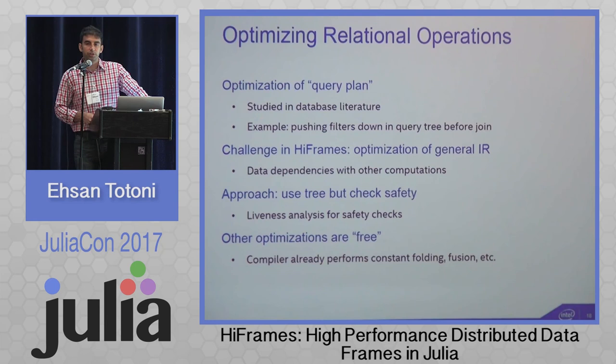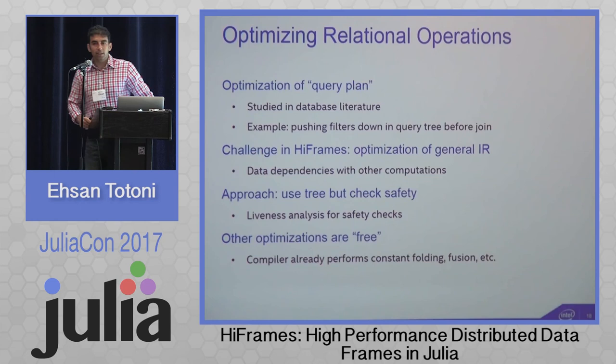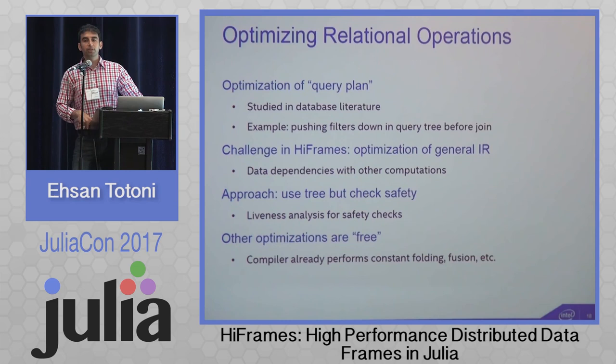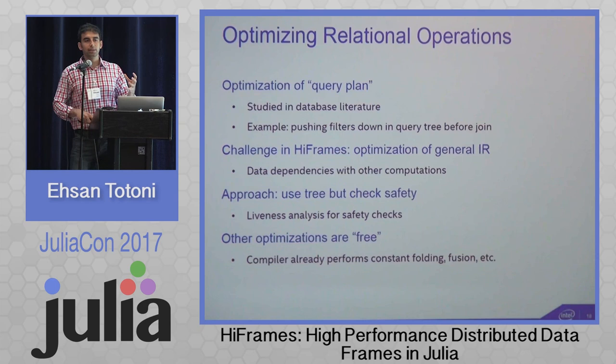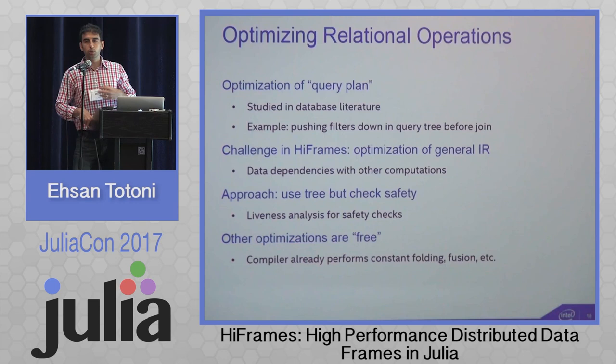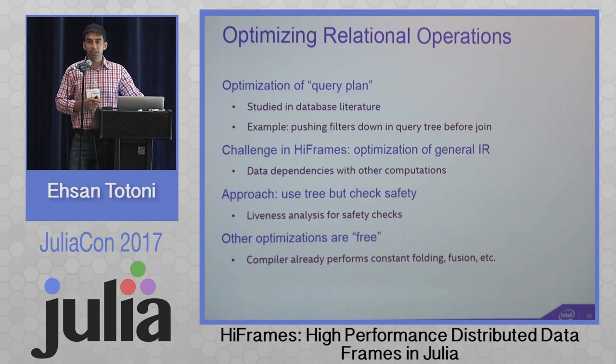The challenge for HiFrames is to perform relational optimizations in a general IR that also contains computation. Our approach is to create a query tree of relationships between filter, join, and aggregate operations, optimize greedily, but before doing transformations check dependencies to ensure they are valid. We also note that many SQL-system optimizations are already free here — our Julia compiler does constant folding and our system does loop fusion automatically, so we don't need to re-implement them for HiFrames.